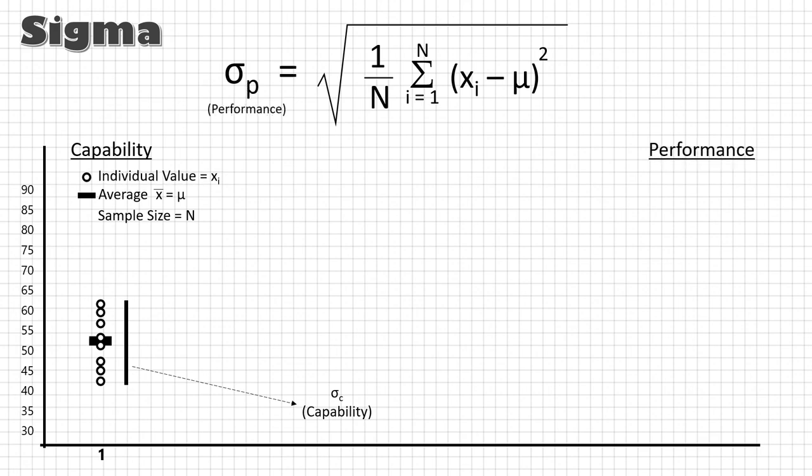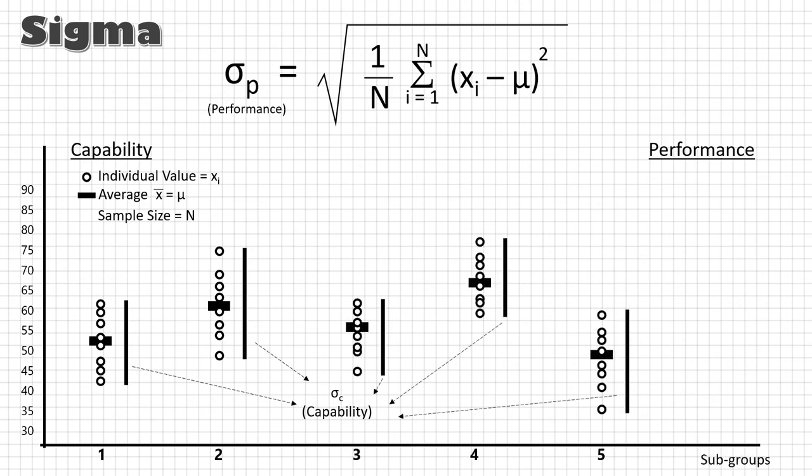While calculating sigma p, we take multiple samples from same process at different times. And now these x bars are taken as xi, and the average of these x bars become x double bar which is taken as mu. And in place of n, we take k as the number of these subgroups. So my sigma p is a function of total variation. And basically, it tells me how the process is behaving over a period of time.